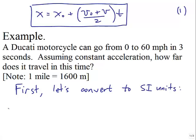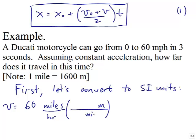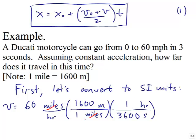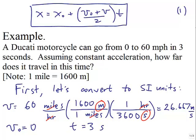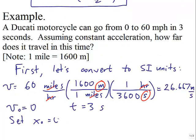We have v equals 60 miles per hour. Multiply by 1,600 meters per mile, then multiply by 1 hour over 3,600 seconds. Miles cancel, hours cancel, and we end up with meters per second — 26.667 meters per second. Initial velocity is 0, time is 3 seconds, and we set the initial position to 0 and solve for final position x.